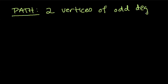Another observation that Euler made was that in order for us to have a path, we have to have exactly two vertices of odd degree. We can't have three, we can't have one, it has to be exactly two. And let's look at why.